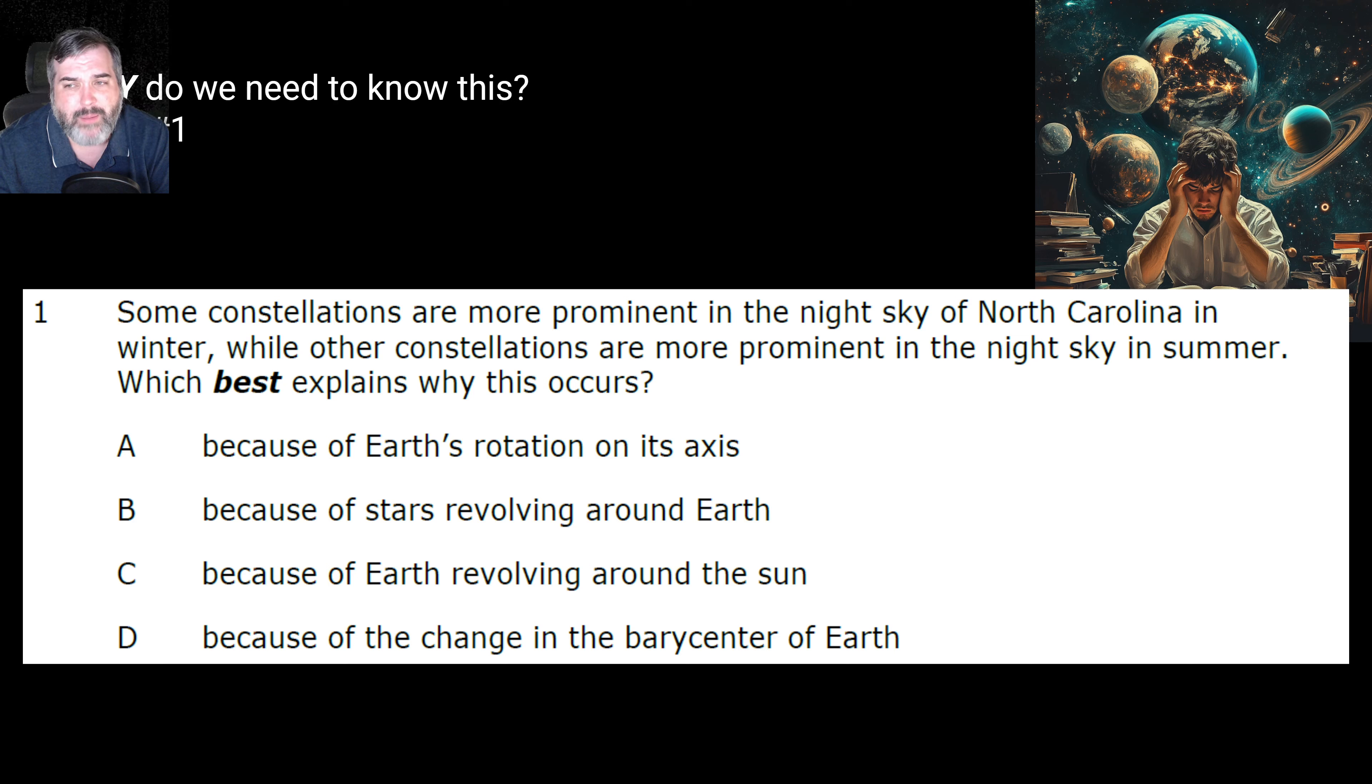From 2019, number one, some constellations are more prominent in the night sky of North Carolina in winter, while other constellations are more prominent in the night sky in summer, which best explains why this occurs. A, because of Earth's rotation on its axis. B, because of the stars revolving around the Earth. C, because of the Earth revolving around the sun. Or D, because of the change in the barycenter of the Earth. I don't think we've talked about barycenter this time. Anyway, five, four, three, two, one. The correct answer is Charlie, because of Earth revolving around the sun. We're changing our location.